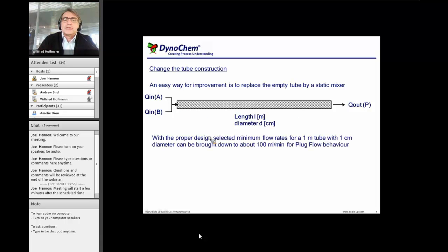So that is some equipment inside the tube which allows a much, much better mixing so that we will get a plug flow which much, much less flow rate. So in this case, with this, we can probably, when we have a proper design, we can bring down the required flow rate for plug flow to about 100 milliliters per minute for a one meter long, one centimeter diameter tube. So that's great,